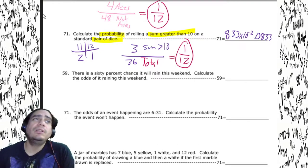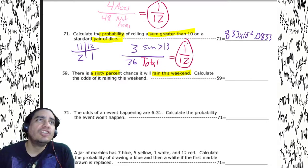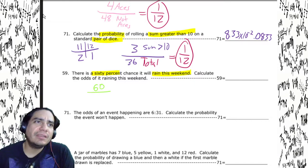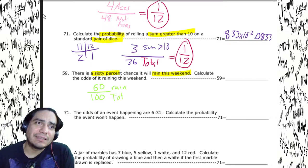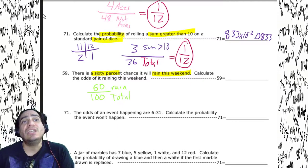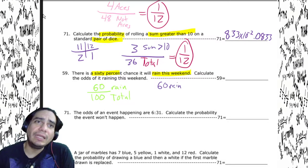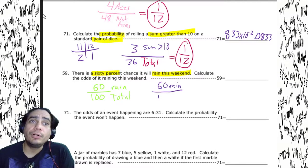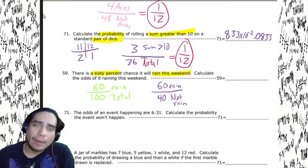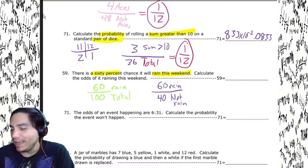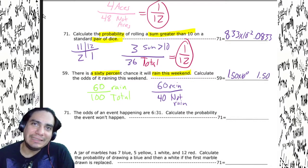There's a 60% chance it will rain this weekend. That means 60 out of 100 is already our probability. Now calculate the odds of it raining. We have 60 for rain, and 40 is the percent that is not rain. So we put 60 over 40. Our correct answer is 1.50 times 10 to the zero, or just 1.50.